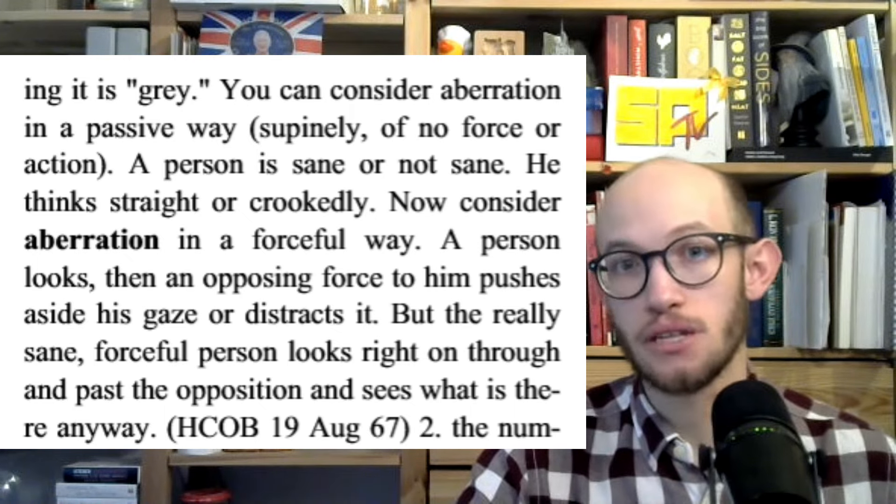HCOB means Hubbard Communication Office Bulletin. In Scientology, Hubbard wrote many different references and policies and gave them different categories. This one would be a bulletin, normally written in red ink on white paper. Now, what I find rather interesting about this definition is that he says very clearly that a person who is aberrated doesn't see only black and doesn't see only white — he is also capable of seeing gray. So he's able to look at nuance, able to question it, able to use critical thinking. And he obviously disapproves of that. You're not allowed to do that. Aberration is any way outside of that.